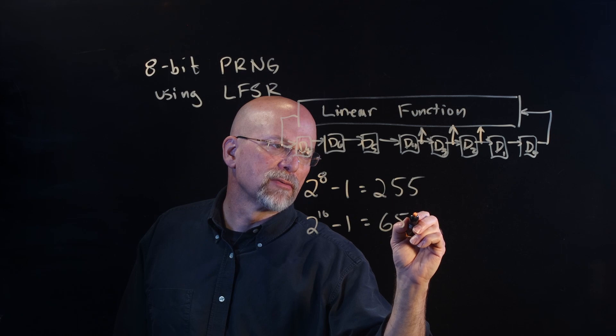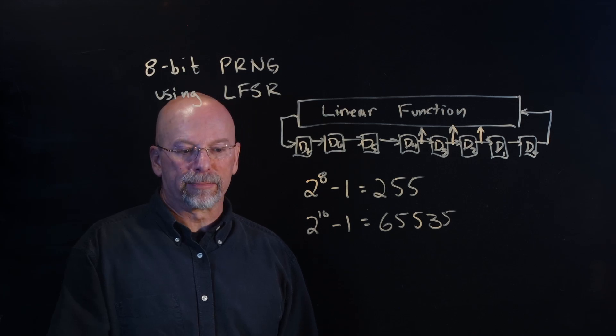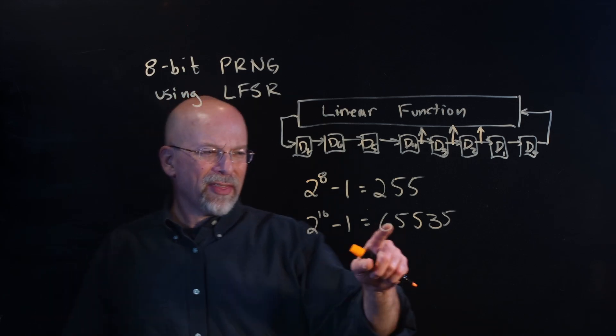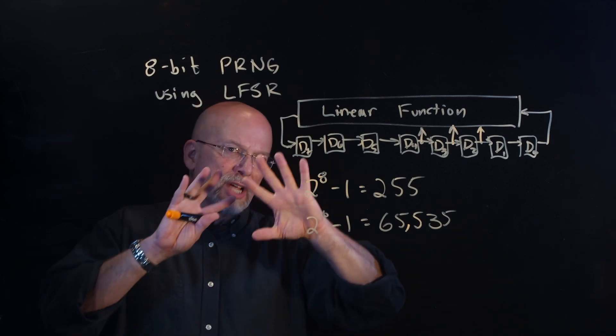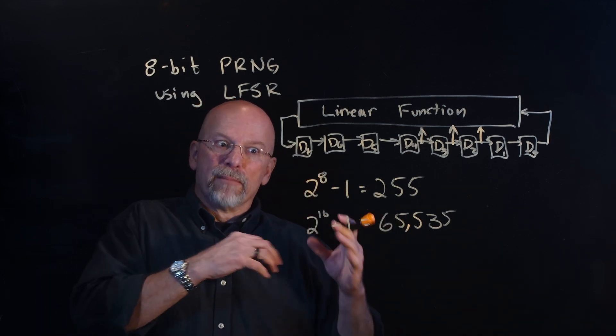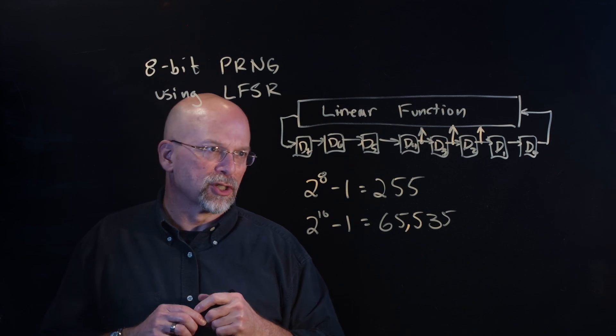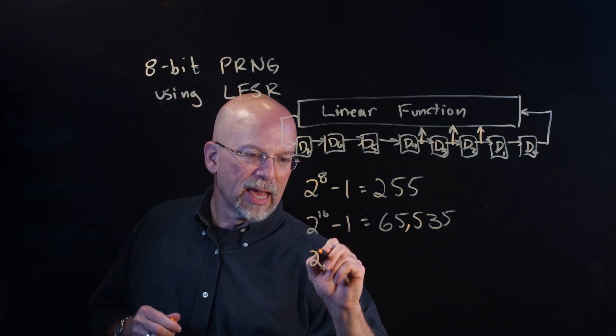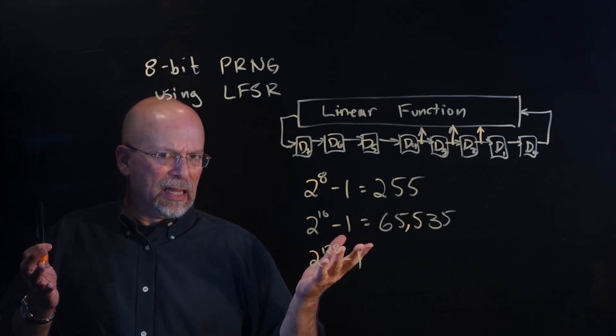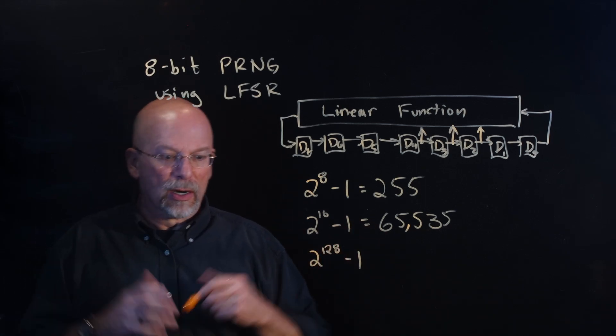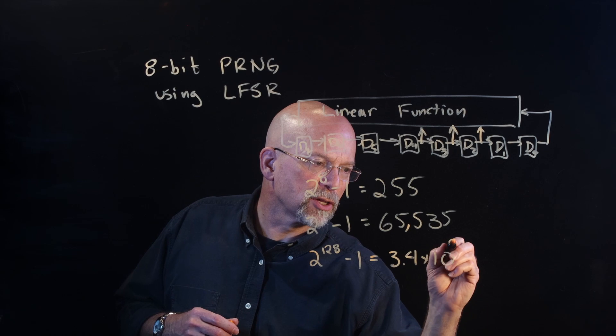Those are all pretty significant. But the problem is that when it comes to doing things like security and so forth, that's probably not big enough. Please understand, don't let your security system rely on random numbers generated using just an LFSR because some algorithms can be used to possibly work your way back if you know what the linear function and the number of bits are that are being used. But that said, 2 to the 128, if we have a 128-bit linear function, 128 bits, that seems like a lot. But 128 bits, that's very little hardware, relatively speaking.